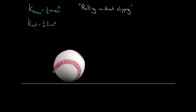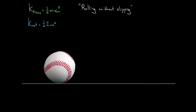Why is this a big deal? This implies that the two kinetic energies are proportional, and moreover, it implies that the center of mass velocity and the angular velocity are also proportional to each other. So how do we prove that the center of mass velocity is proportional to the angular velocity?